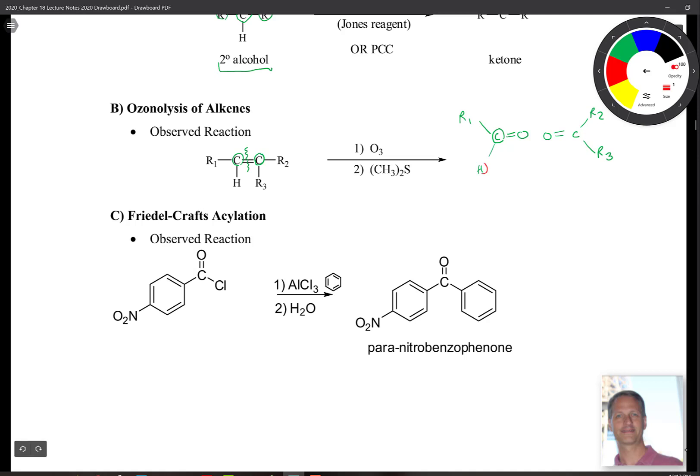So it would give us a mixture of aldehydes and ketones. In this case, this can be oxidized further, but it stops with ozonolysis. This stops here, and we end up with our ketone.